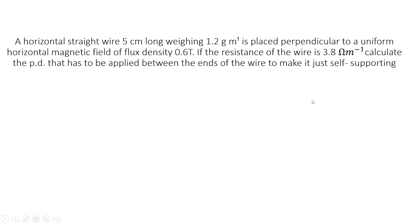Horizontal straight wire, 5 cm long. Length L equals 5 into 10 to the power minus 2 meter.